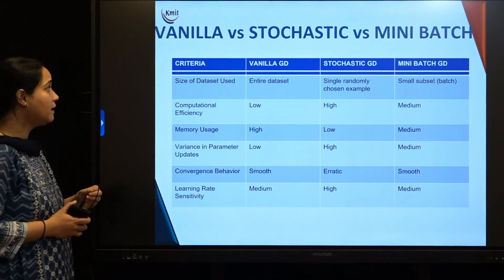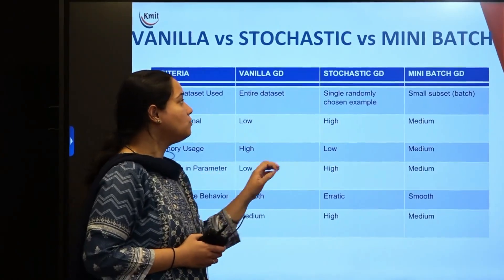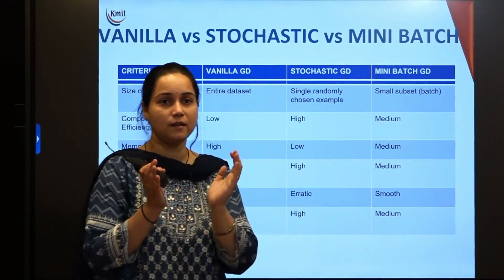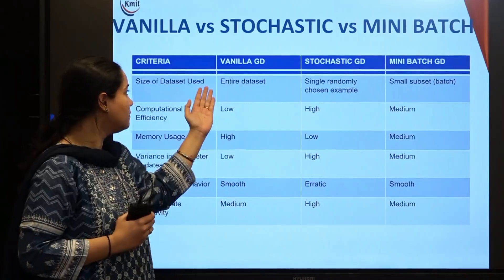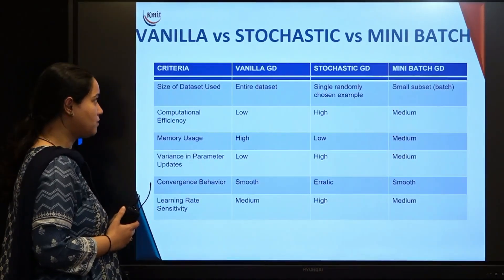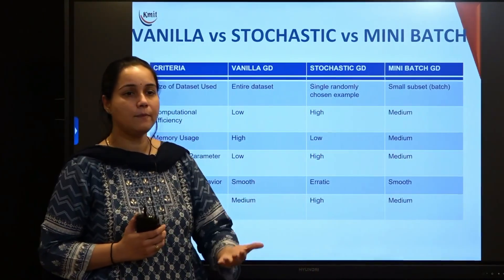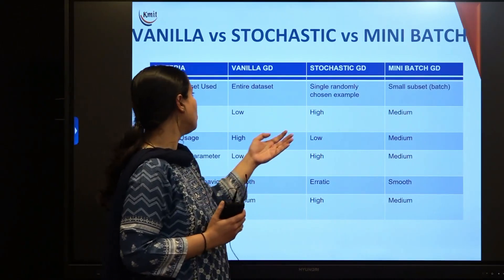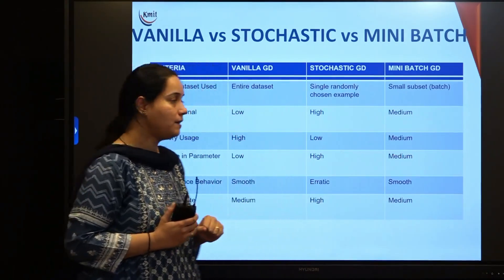Mini-batch takes the best qualities of both vanilla and stochastic gradient descent. Comparing the three by dataset size used: vanilla gradient descent uses the entire dataset, stochastic uses a single randomly chosen example, and mini-batch uses small sub-sampled batches. For computational efficiency: vanilla is low because processing all samples is time-consuming, stochastic is high since it processes one sample at a time, and mini-batch is medium.